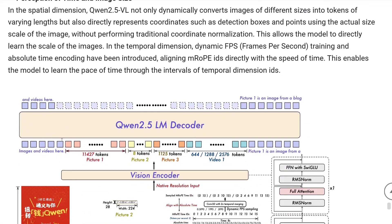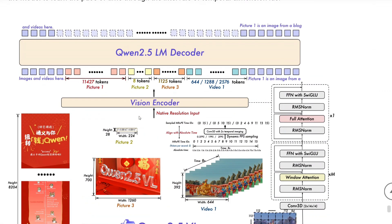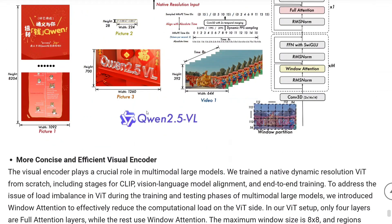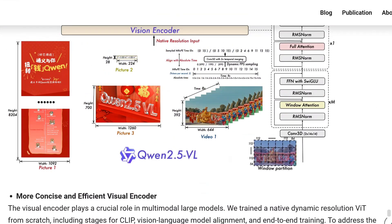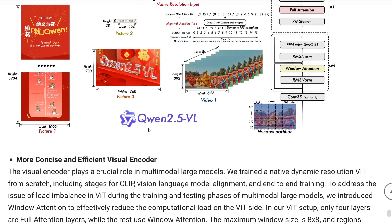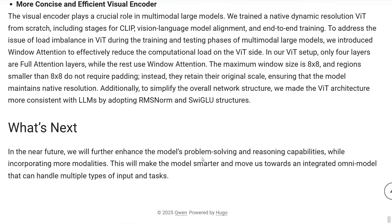Looking at the model update, this is the architecture the team has shared. I'm not jumping too deep into the architecture for now, as it's a bit complicated and I'll give it a more detailed read. As the team has mentioned, in the near future they will be further enhancing the model's problem-solving and reasoning capabilities. Now we've talked about our first model, Qwen 2.5 Vision.